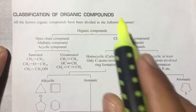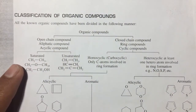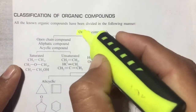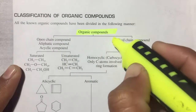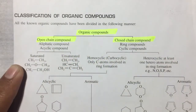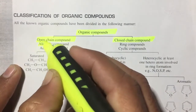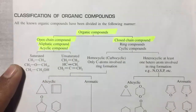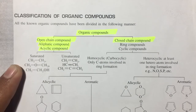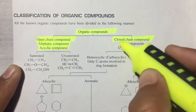Classification of organic compounds: all known organic compounds have been divided into two types — number one, closed chain, and number two, open chain. Open chain's another name is aliphatic compounds. Open chain has two names: aliphatic compounds and acyclic compounds. Closed chain compounds are also called ring compounds.